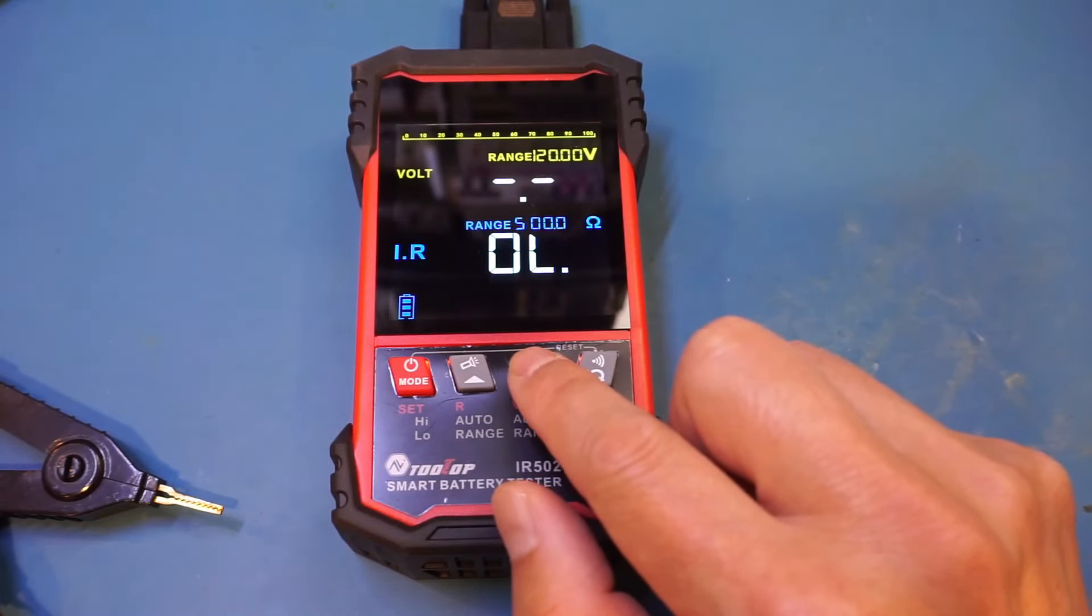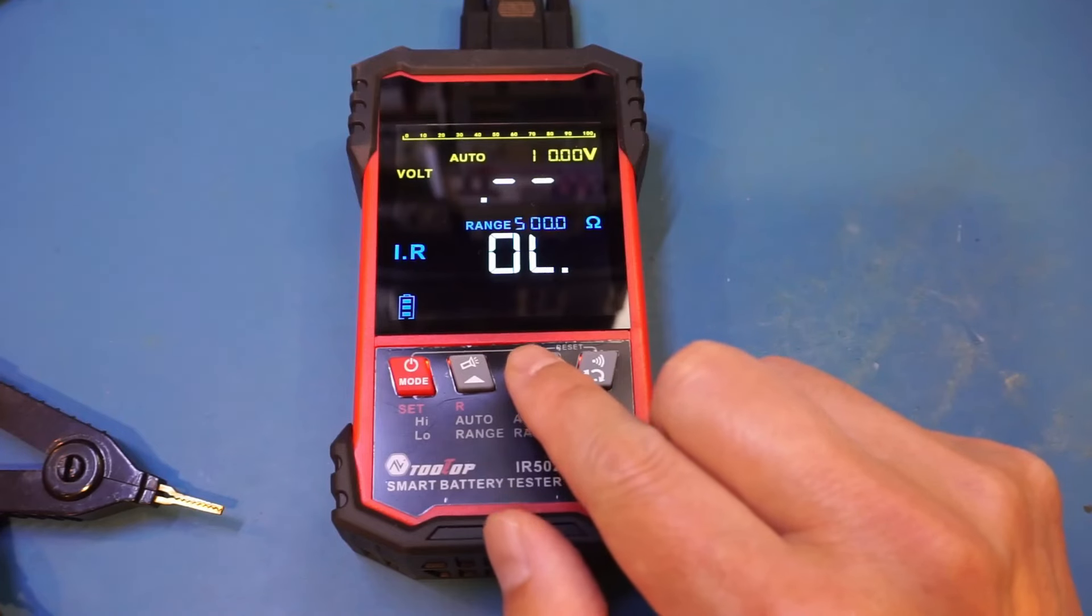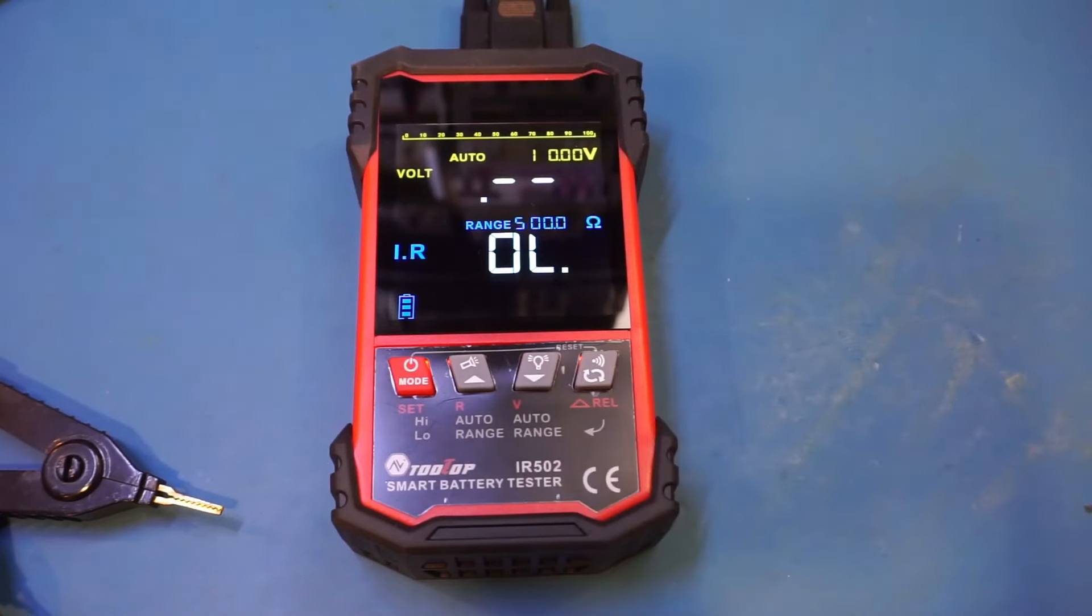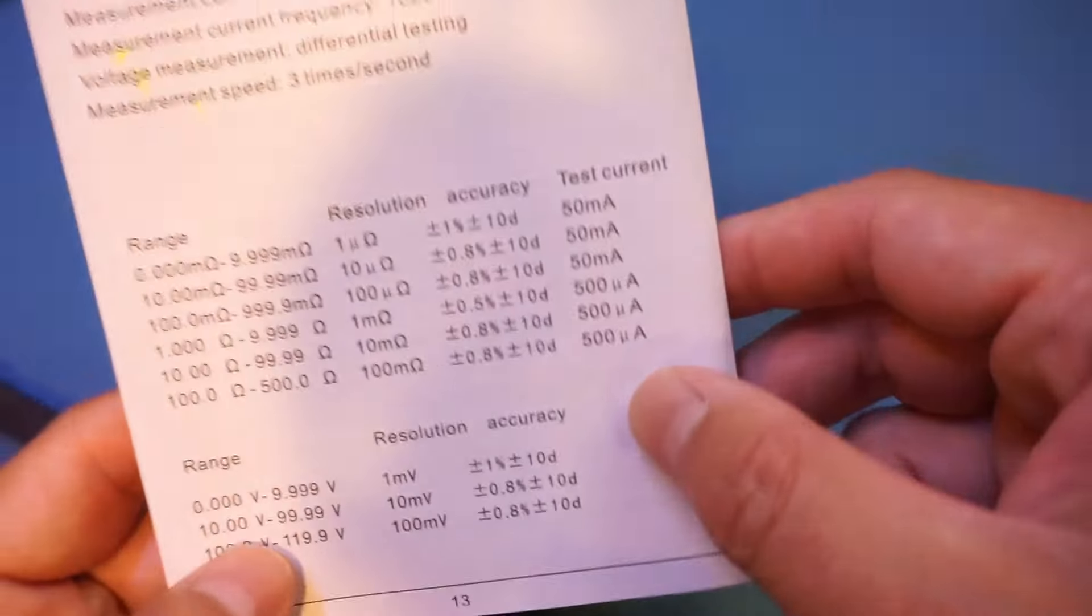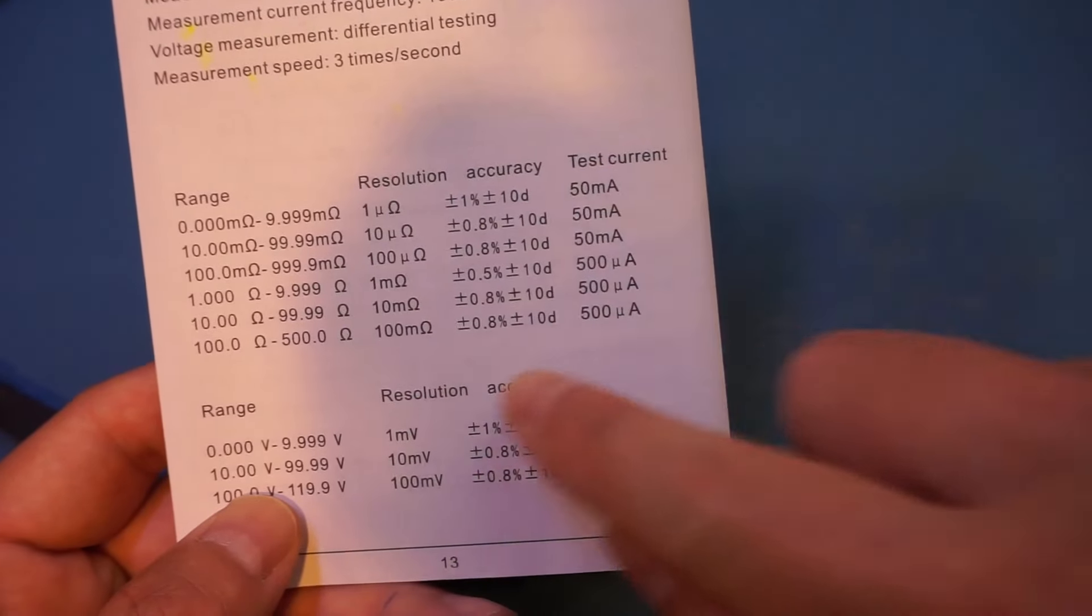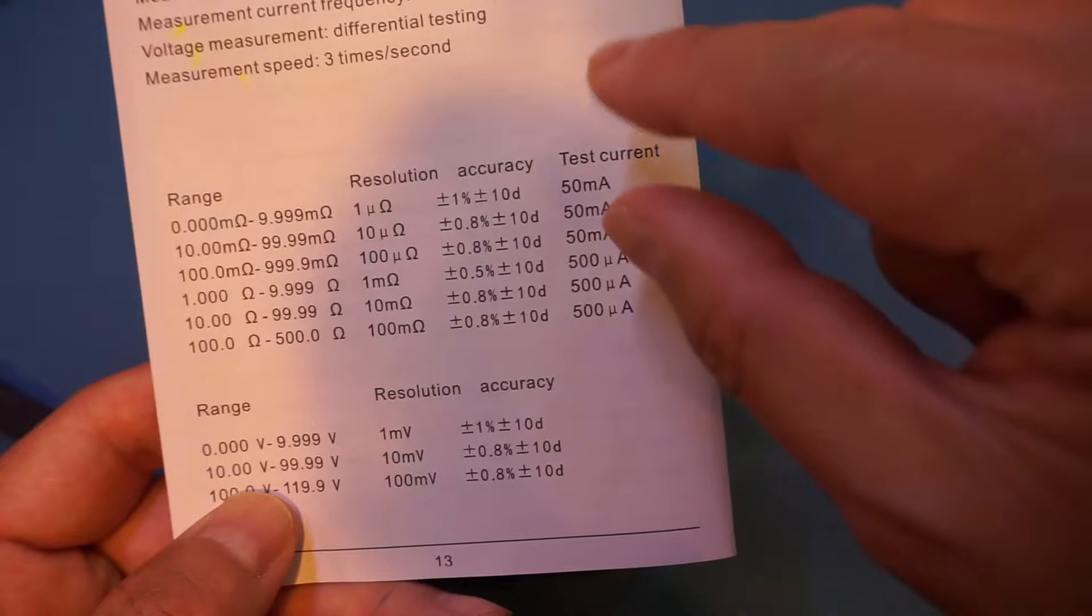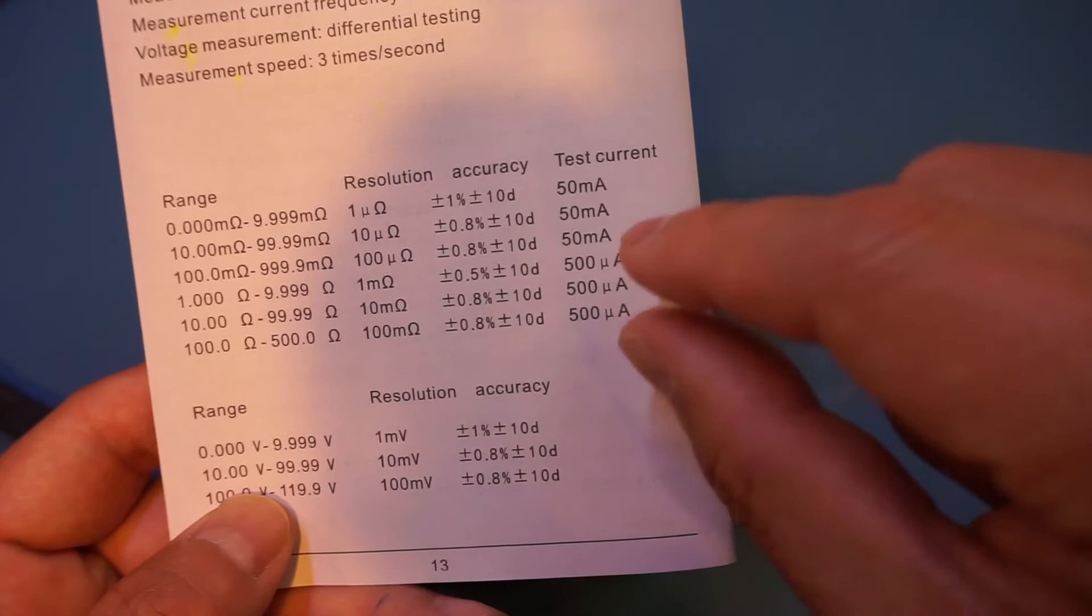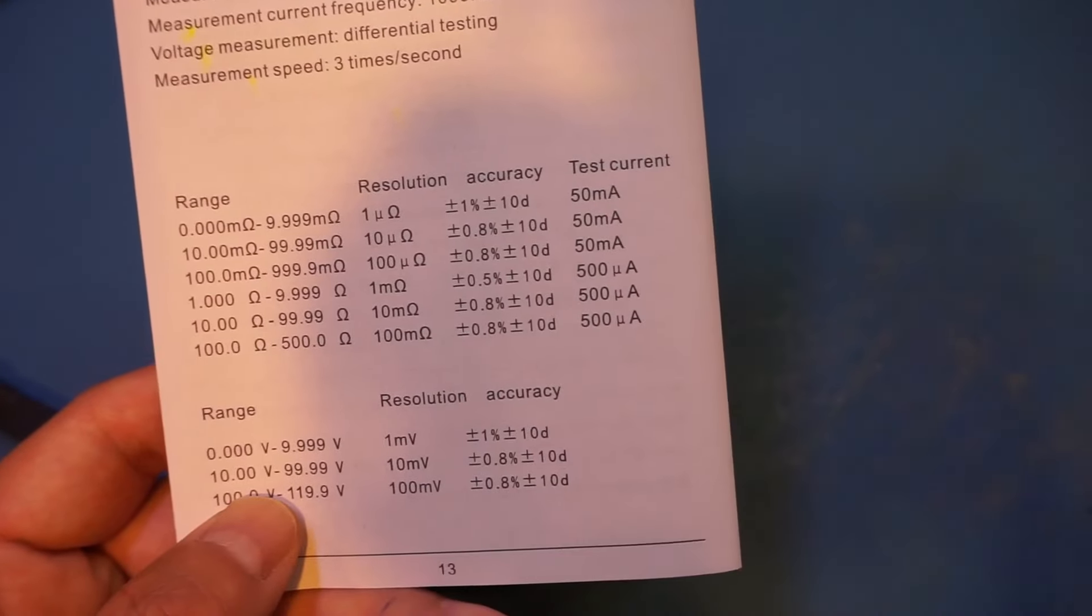And finally 500 ohms, so these are the available ranges for the internal resistance. This button we can cycle through the different voltage ranges. Now we're back to auto. If you look at the supplied manual here, it tells you the testing conditions under different ranges and the associated accuracy. You can see that we essentially are using two different currents for the measurements depending on the ranges used.